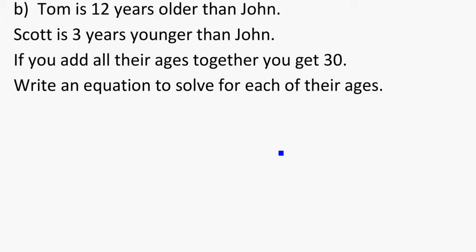So Tom is 12 years older than John. Scott is 3 years younger than John. If you add all their ages together, you get 30. Write an equation to solve for each of their ages. So what if we call John x? Then Tom is 12 years older than John, so he's x plus 12. And Scott is 3 years younger than John, so that's x minus 3.